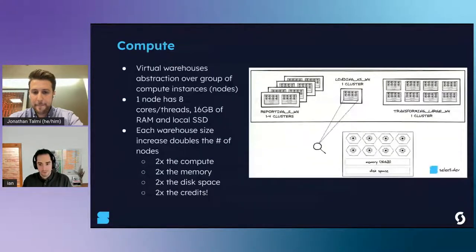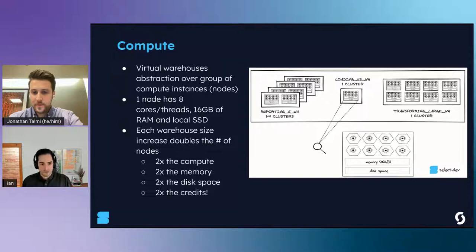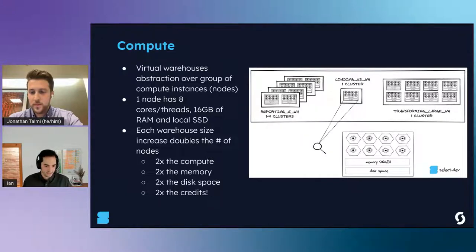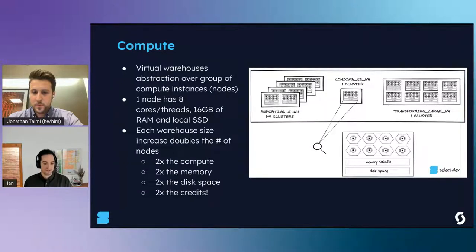The layer most of you will be most familiar with is the compute layer, where actual query execution happens. Snowflake uses an abstraction called virtual warehouses - a bunch of compute instances or nodes. A node typically has 8 cores or threads, 16 gigabytes of RAM, and some local disk space. Snowflake uses t-shirt sizing for their warehouses: extra small, small, medium, large, etc. Each time you increase the warehouse size you double the number of nodes, so you get double the compute, twice the memory, twice the disk - but you also double the credits billed each second.